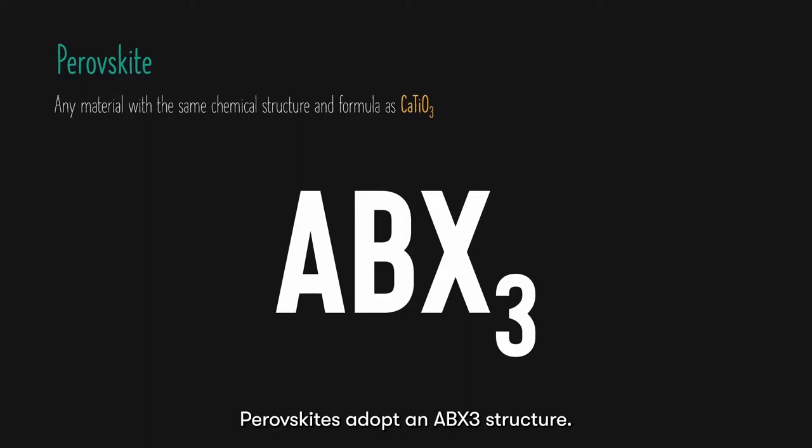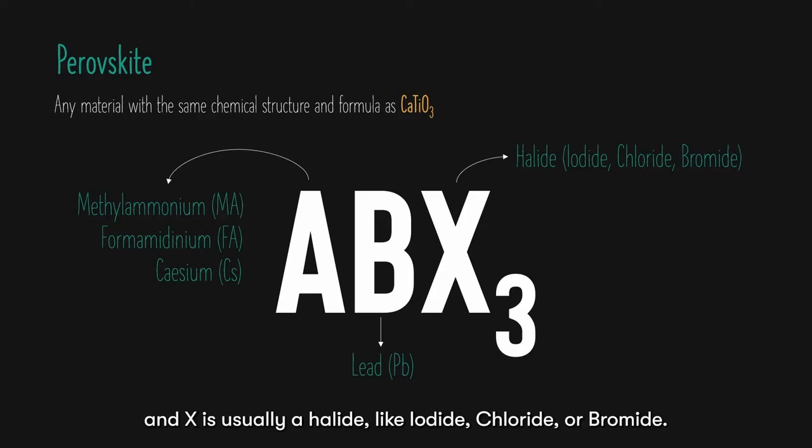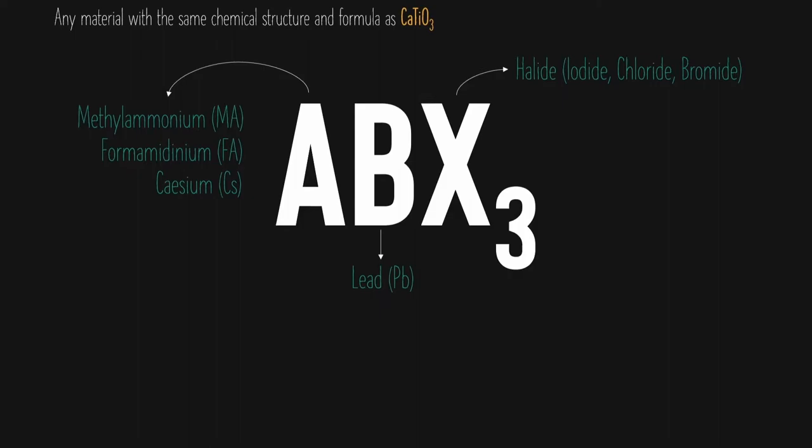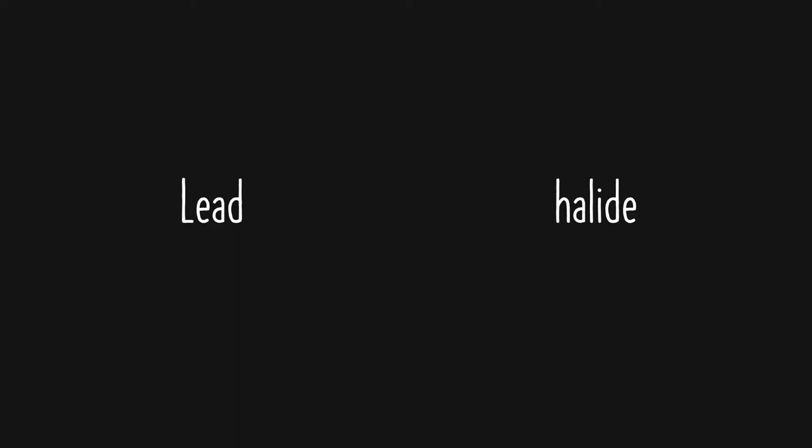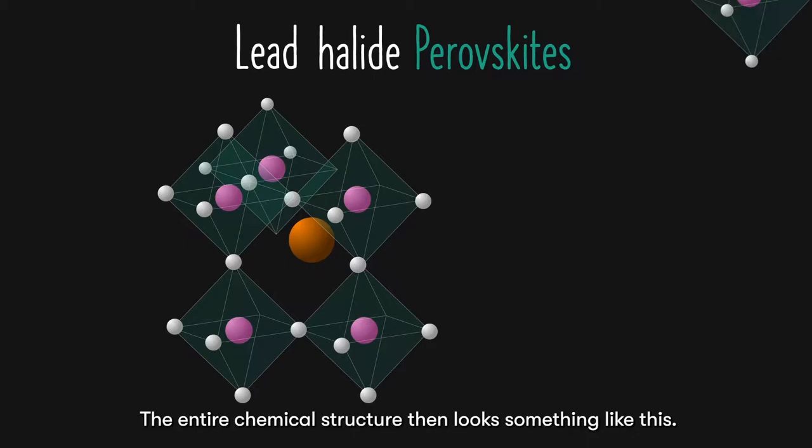Perovskites adopt an ABX3 structure. A is usually an organic cation like methyl ammonium or formamidinium. It can also come from an inorganic cation like cesium. B is almost always lead. And X is usually a halide like iodide, chloride or bromide. Almost all perovskites consist of lead and halide. This is why we call them lead halide perovskites.